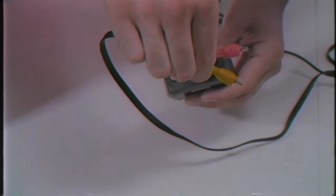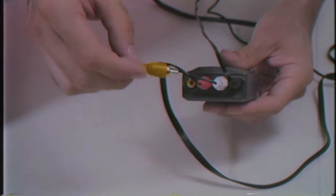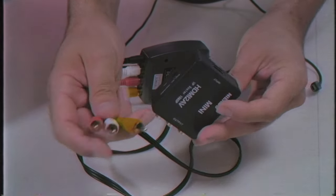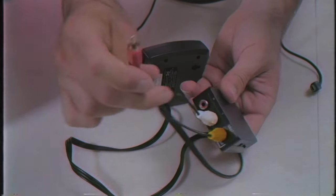Take your RCA cable and connect each input to the corresponding color. Take the other end of the cable and connect it into your HDMI to RCA adapter.